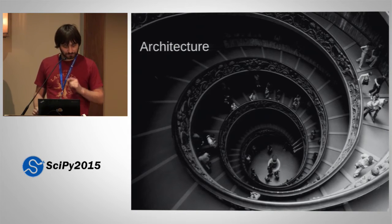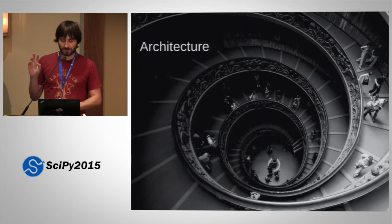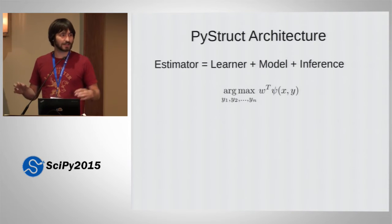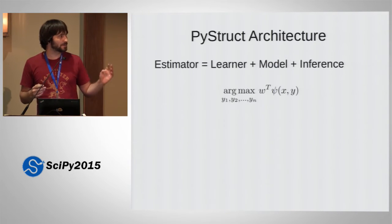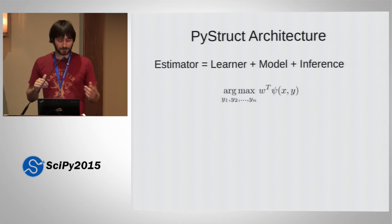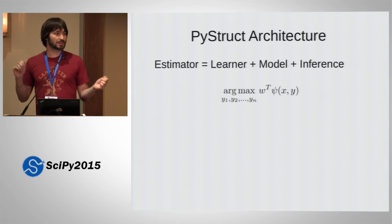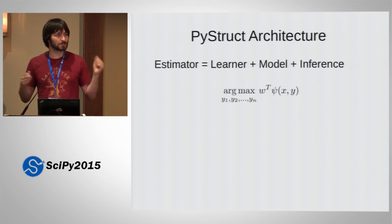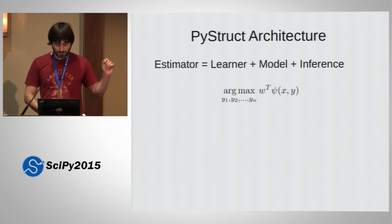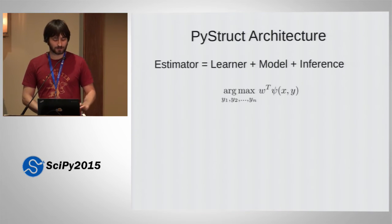So now how does this work in code? The architecture of PyStruct tries to be similar to scikit-learn, but it's slightly more complicated. To get an estimator object, like you would have logistic regression or SVM in scikit-learn, you need to combine three things: one is the learner — the thing that learns from the data and gives you a W; one is the model that constructs this graph and says which things belong together, whether it's a multi-label problem or a sequence labeling problem; and the last one is the part that computes this argmax. So the learner finds the W, the model says how does this work, and the inference says how do I compute the argmax.